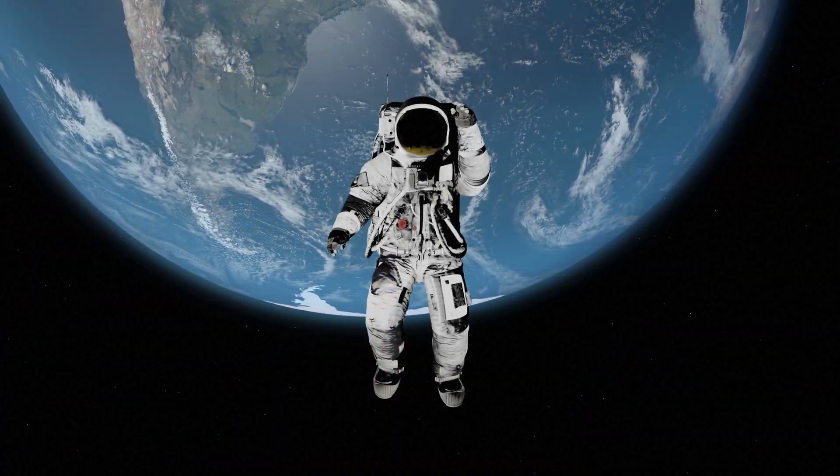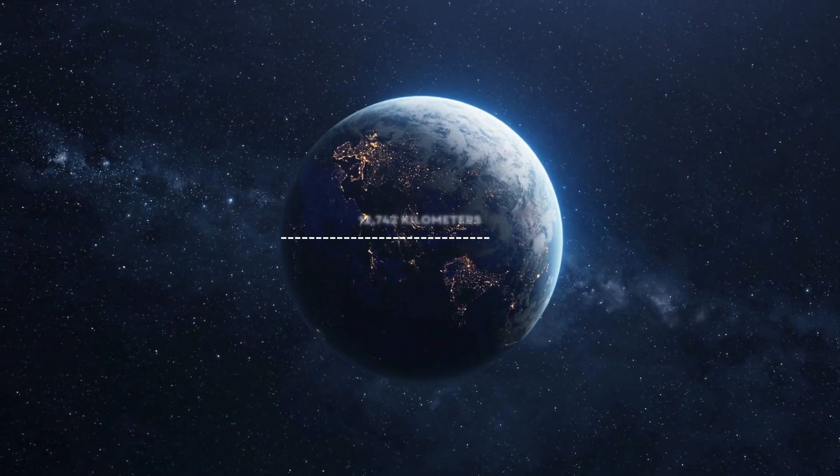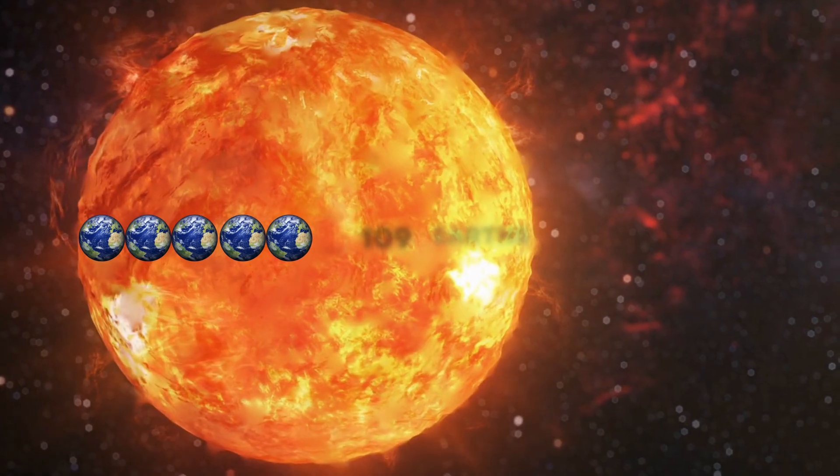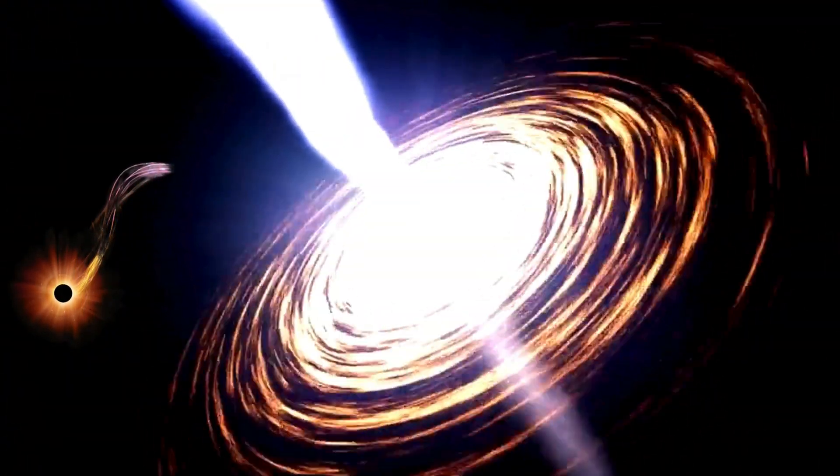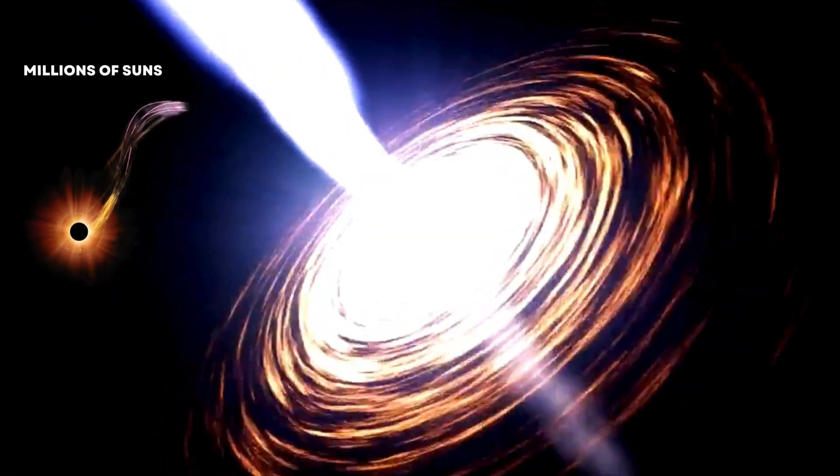To give you a sense of scale, let's start with Earth. Our planet has a diameter of about 12,742 kilometers. The Sun is about 109 times wider than Earth. Now, imagine a black hole that could fit not just the Sun, but millions of Suns inside it.